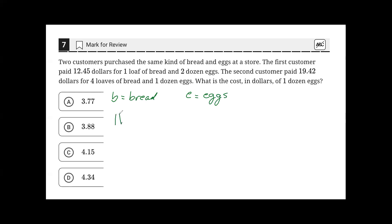one bread plus two eggs is equal to $12.45.